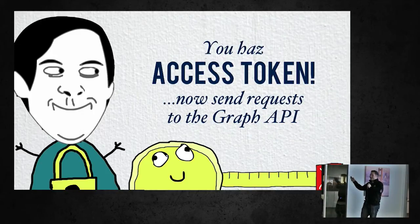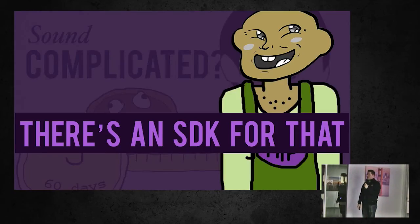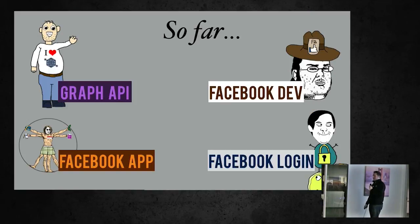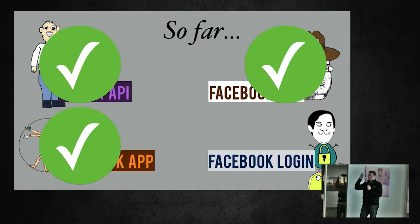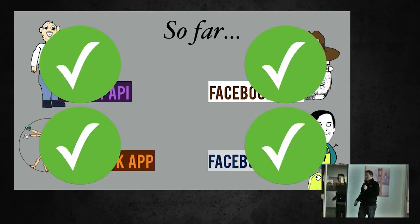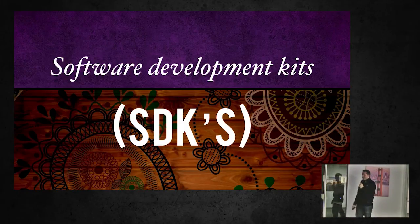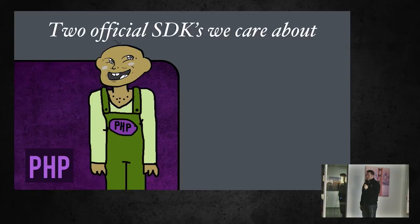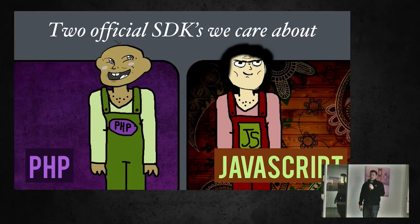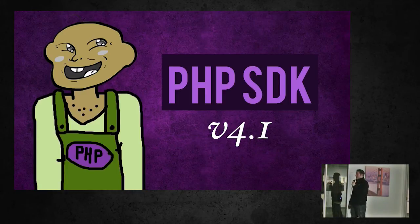Once you have a long-lived access token, you can make requests to the Graph API. That's what SDKs are for. So far we've covered the Graph API and Graph Theory, how to become a Facebook developer, the anatomy of a Facebook app, keeping app secrets secret, Facebook login, and access tokens. The only thing left in this talk is the SDKs. There are two official SDKs we care about: the PHP SDK and the JavaScript SDK. The PHP SDK is at version 4.1 — though it hasn't been officially released yet; the current stable version is 4.0.